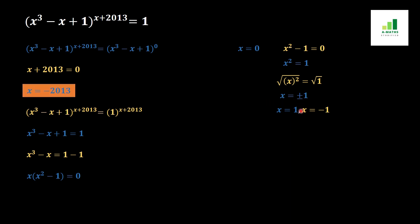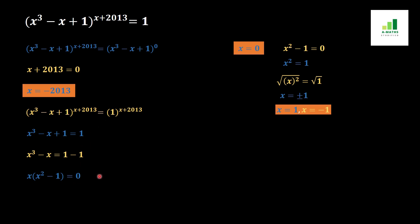We solved this question in two ways: first by making the bases equal after converting 1 to (x³ - x + 1)^0, and secondly by making the powers equal after converting 1 to 1^(x + 2013). In total we get four answers for x: x = -2013, x = 0, and x = ±1. I hope you liked this video — please hit the like button and subscribe to our channel. Thank you.